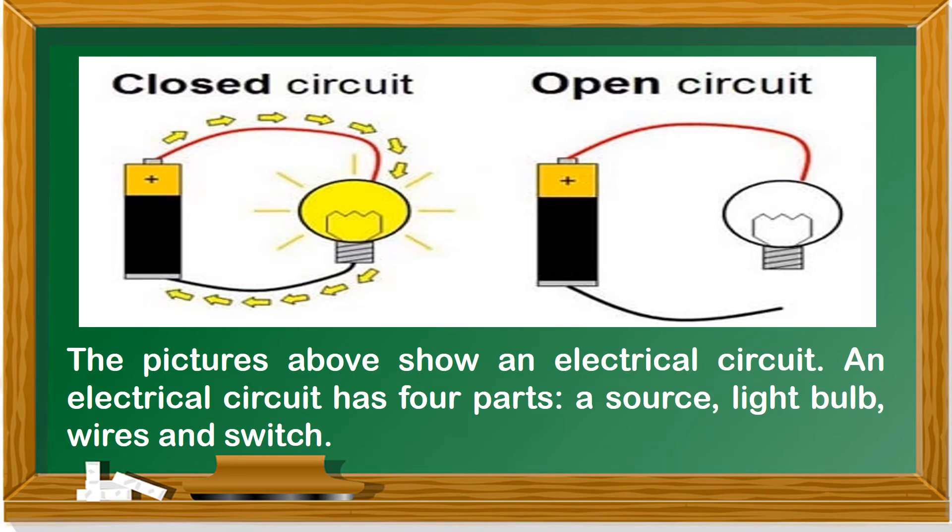The pictures above show an electrical circuit. An electrical circuit has four parts: a source, light bulb, wires, and switch.